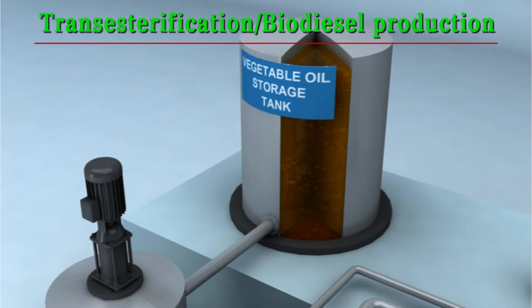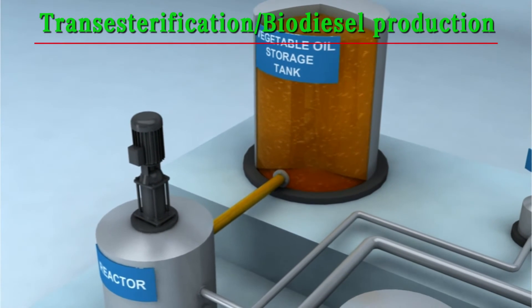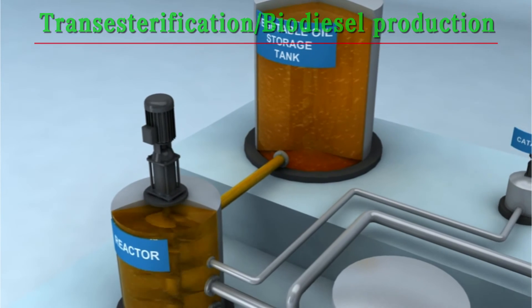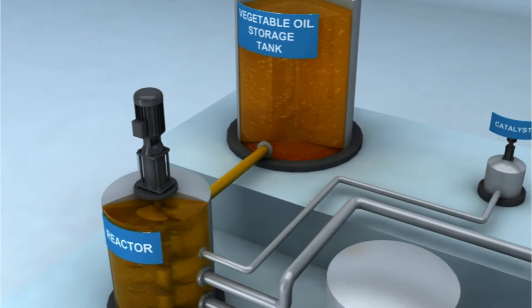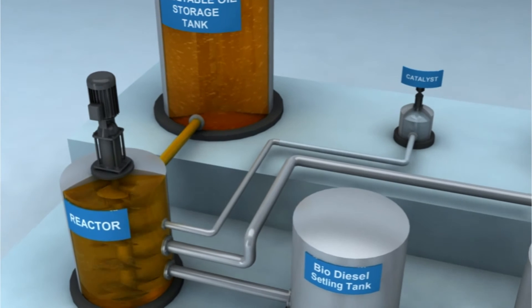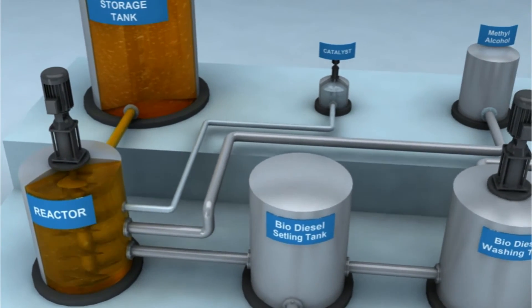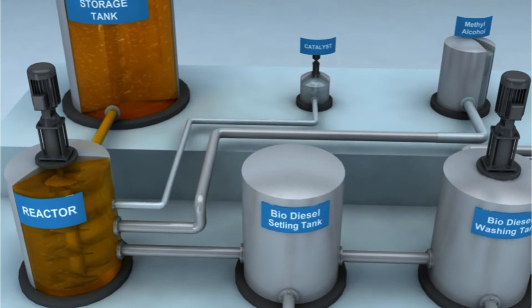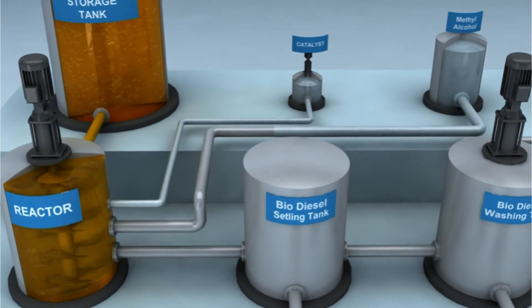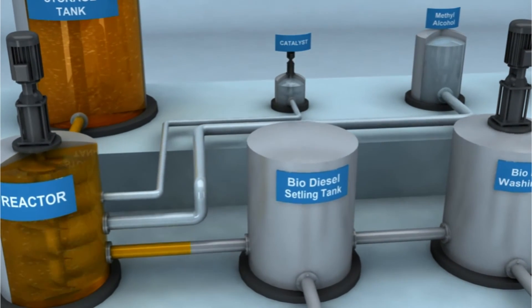In transesterification biodiesel production, a measured quantity of vegetable oil or fat is taken into a reactor and heated to a temperature of 50 degrees Celsius. The required quantity of methanol and catalyst — potassium methoxide — is then added to the reactor for catalyzing the reaction. The reactants are stirred properly at 60 degrees Celsius for 50 minutes.